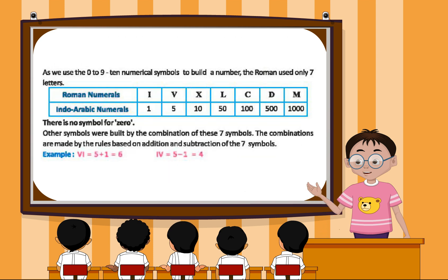As we use the 0 to 9, ten numerical symbols to build a number, the Romans used only 7 letters. Roman numerals: I equals 1, V equals 5, X equals 10, L equals 50, C equals 100, D equals 500, M equals 1000.